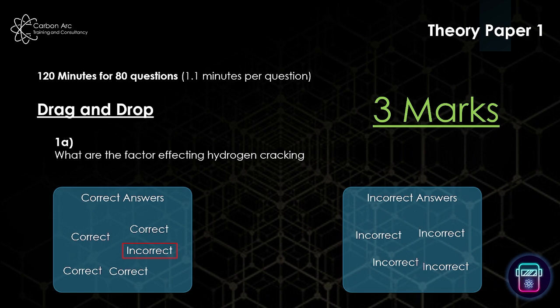You have to make sure you are fully certain of which answers are correct and which are incorrect. You can't just put every answer into the correct box and gain all the marks. There'll also be fill-in-the-missing-word questions, where you complete a sentence — something like 'hydrogen cracking is also known as, which of the following?' and you'll have A, B, C, D to select — for example, cold cracking or delayed cracking. So Theory Paper One is 120 minutes, 80 questions, with drag and drops, fill-in-the-missing-word, and two-part leading questions.